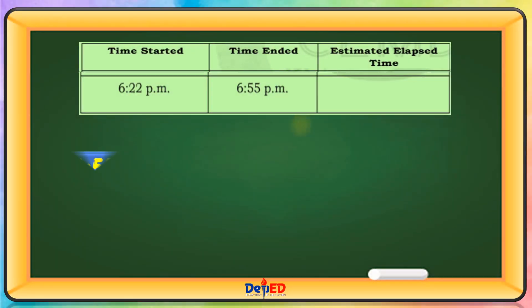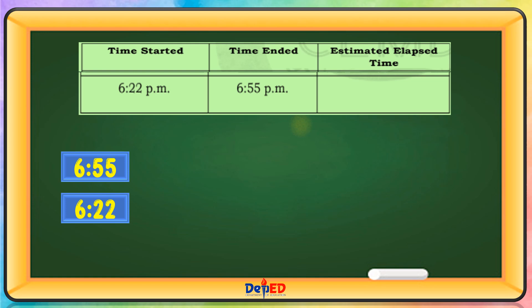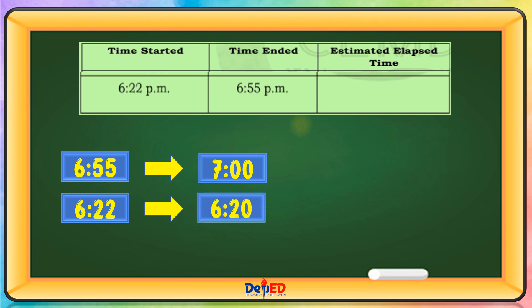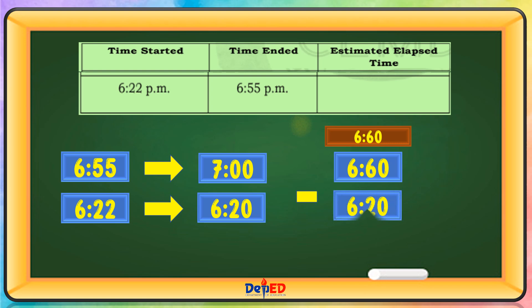From 6:22 to 6:55 — round off to the nearest tens: 6:55 becomes 7:00, and 6:22 becomes 6:20. Since 7:00 becomes 6:60, then 6:60 minus 6:20 equals 40 minutes.